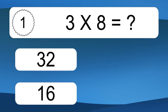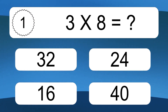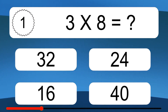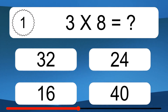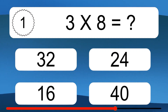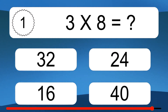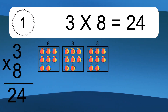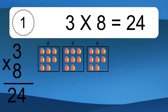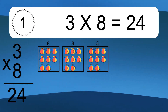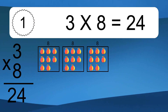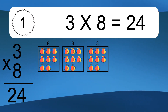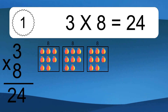3 times 8 equals what? 3 times 8 equals 24. We have 3 boxes, and each box has 8 colorful balls inside. If you count all the balls in all the boxes together, you will have 3 times 8 balls. This equals 24 balls.